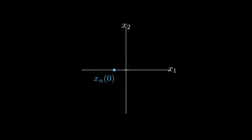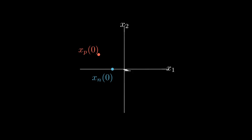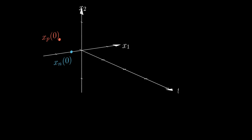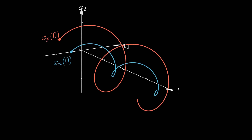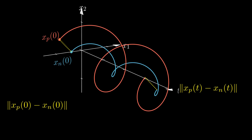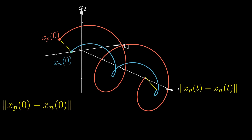Now that we have introduced all the required language, we can finally explain the notion of Lyapunov stability. The objective of stability theory is to establish properties of motions subject to perturbations in the initial state. Consider a nominal trajectory xn(t) starting from xn(0) and a perturbed trajectory xp(t) starting from xp(0). We call the quantity xp(0) - xn(0) the initial perturbation, while xp(t) - xn(t) is the perturbation at time t. We want to find the relation between the norm of xp(t) - xn(t) and the norm of xp(0) - xn(0), where the norm essentially indicates the distance between these two points.